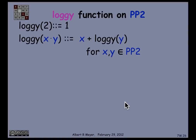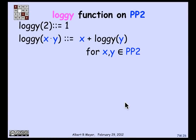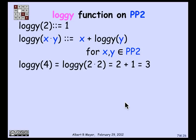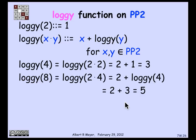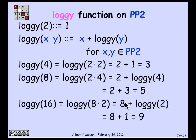Now let's define a new function called log_e, another function on the positive powers of 2. Log_e of 2 is 1, just as log is. But log_e of x·y is x plus log_e of y for all x, y in positive powers of 2. Let's try that definition: log_e of 4 is log_e of 2 times 2, which is 2 plus log_e of 2, which is 1 — so it's 3. Log_e of 8: since 8 is 2 times 4, log_e of 8 is 2 plus log_e of 4. We just found log_e of 4 is 3, so it's 2 plus 3 is 5. Log_e of 16: since 16 is 8 times 2, log_e of 8 times 2 is 8 plus log_e of 2, which is 1 — so log_e of 16 is 9.